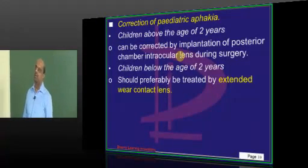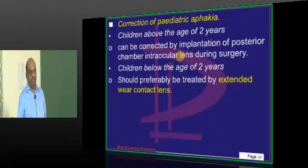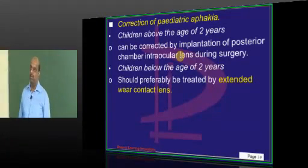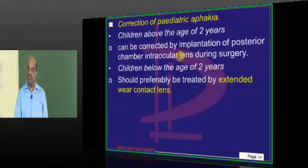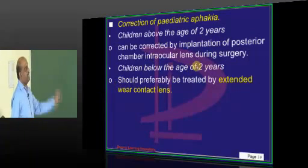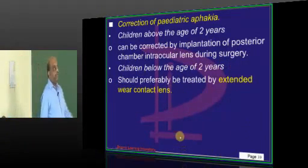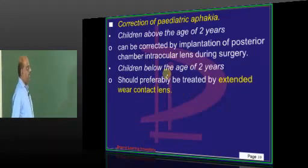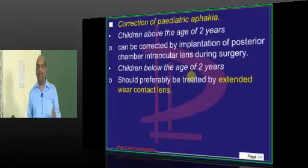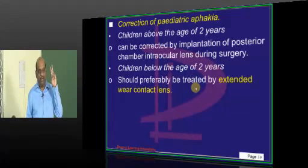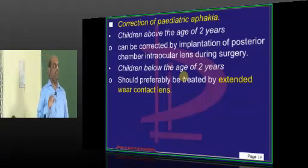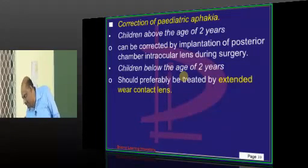Once you remove the lens, the child will have aphakia. If the child is above two years of age, you can place a posterior chamber IOL during surgery. If the child is below two years, you need to treat with extended-wear contact lens. The benchmark in pediatric aphakia management is two years — that difference in management is a favorite MCQ you need to be 100% sure about.